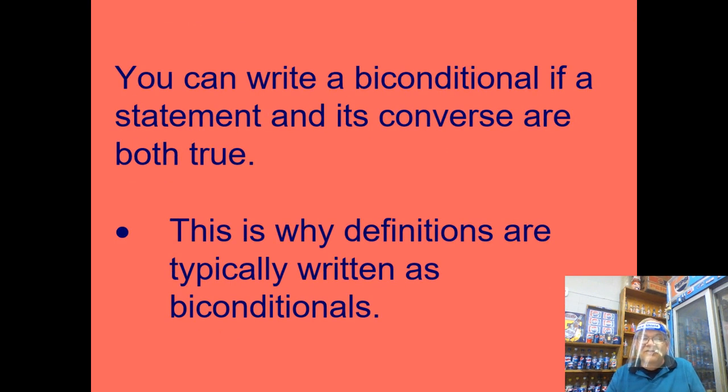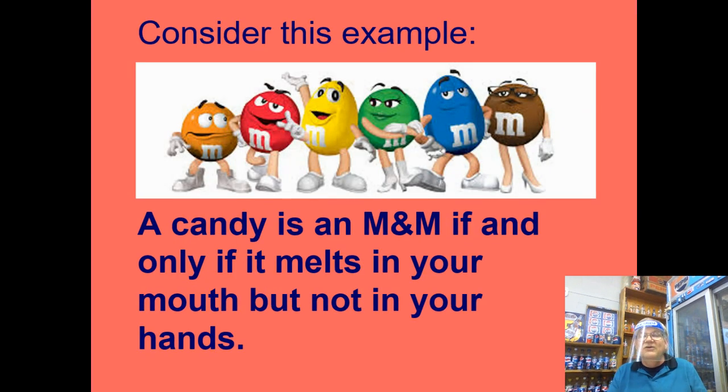When you write a biconditional, basically what it's saying is that both the statement and its converse are true. So all you really have to do for the second of those if-then sentences is write the converse exactly like you did yesterday for the assignment that you were doing. We're going to look at a couple of other examples today, and that's pretty much the last part we're going to do.